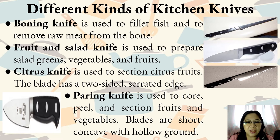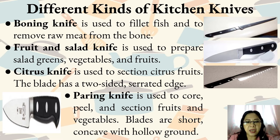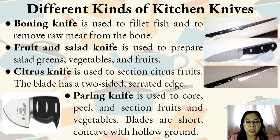Citrus knife is used to section citrus fruits; the blade has a two-sided serrated edge. Paring knife is used to core, peel, and section fruits and vegetables. Blades are short and concave with hollow ground.